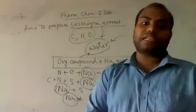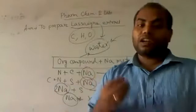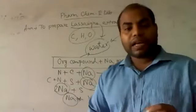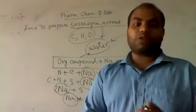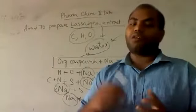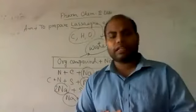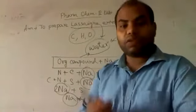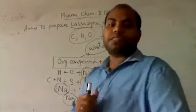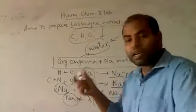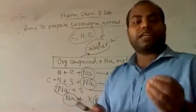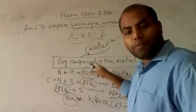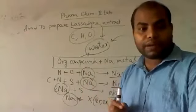Another question arises: why do we use sodium metal and not another metal? Sodium metal is the softest among metals, and it can be finely cut using laboratory equipment such as a spatula or forceps. You cannot cut iron or copper that way using lab equipment. Sodium metal is also very reactive and easily available in the laboratory, which is why it is used for Lassaigne extract preparation.